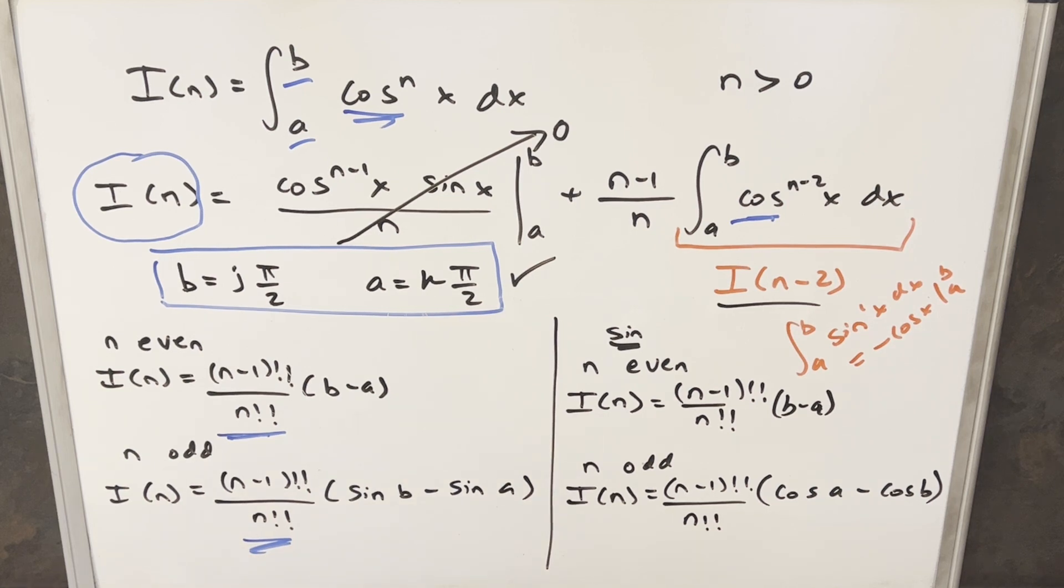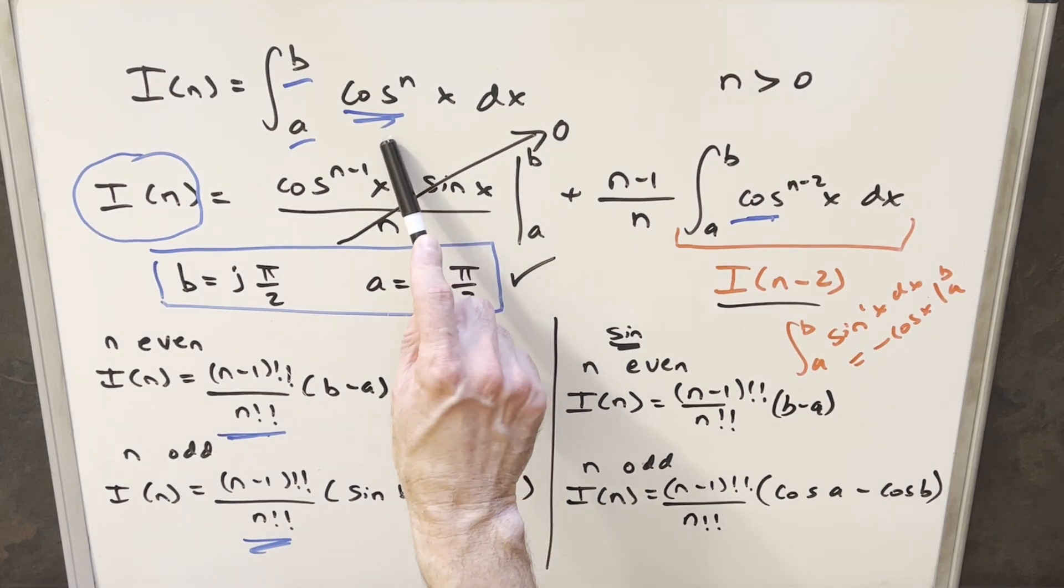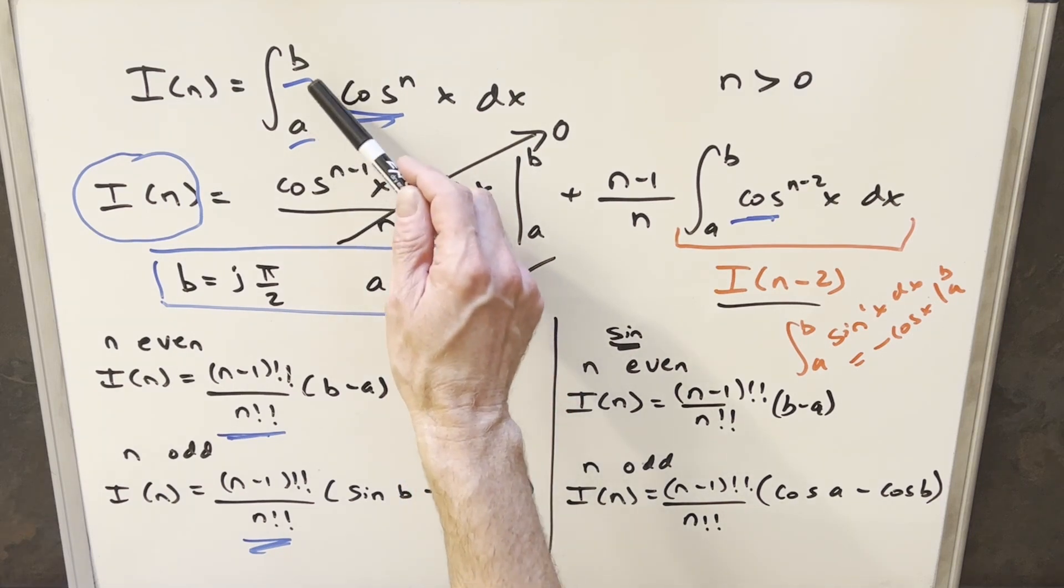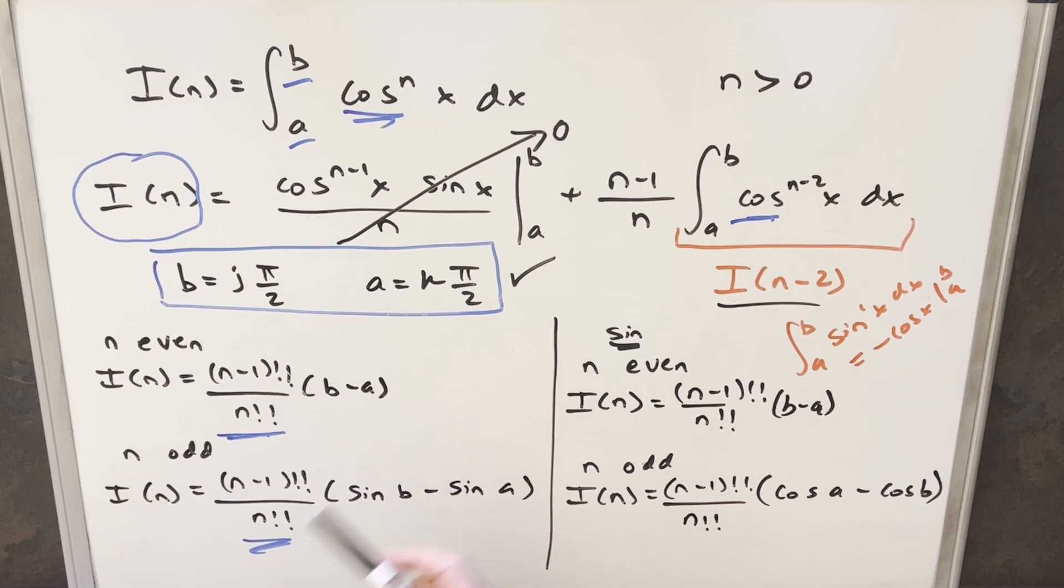Hey, so as you can see, what I'm doing today is actually a continuation from the previous video that we still have on the board. Fortunately, I didn't erase this. What we did in the previous video is we looked at this general form of an integral of cosine to the n, just integrating this from a to b. This here was a very general case. What I wanted to do today was look at a more specific case, which is the Wallis integral.